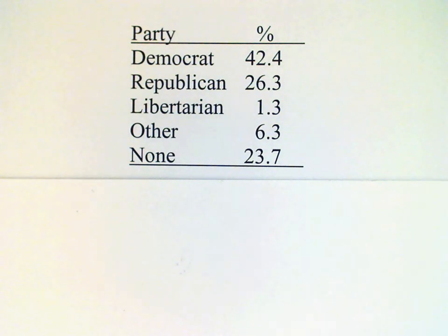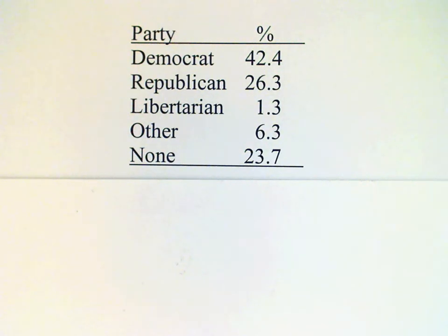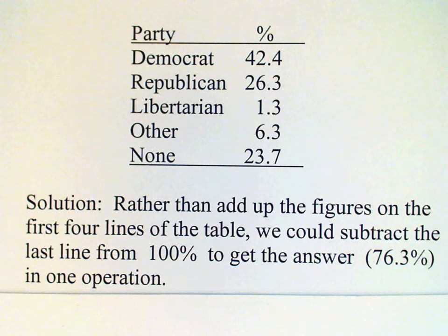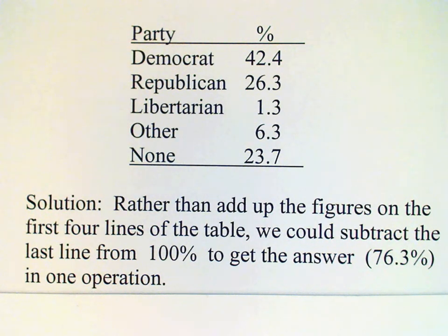The indirect way, which may be easier, is to subtract the percent of those people who have no party affiliation from 100%. When we do that, we get 76.3%, which is the same answer we would get by adding up 42.4, 26.3, 1.3, and 6.3.